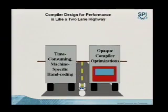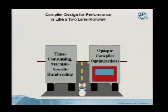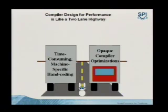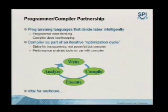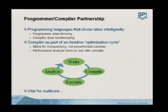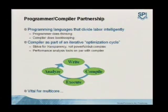You don't want to go into that lane. In the other lane, we have the oncoming semi of time-consuming machine-specific hand coding. This semi has been a popular death trap for industry — usually it only severely wounded efforts and they were able to slowly limp along. A practical, safer approach is a programmer-compiler partnership: actively think of the programmer and the compiler working together. The programmer does the heavy thinking; the compiler does the bookkeeping.